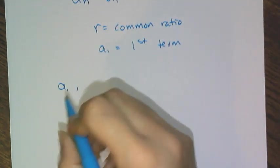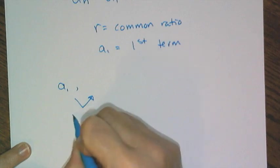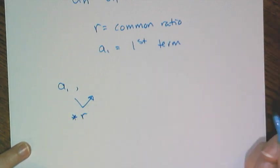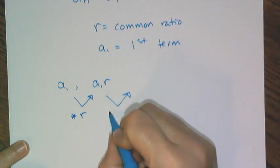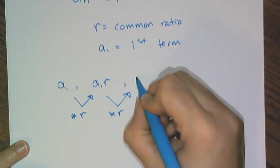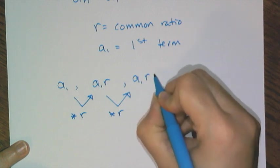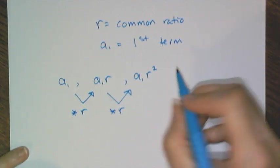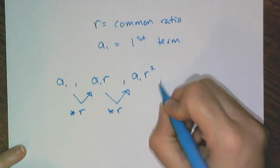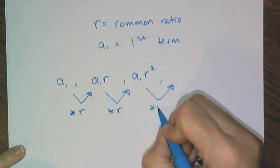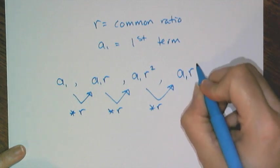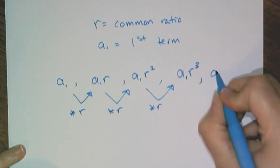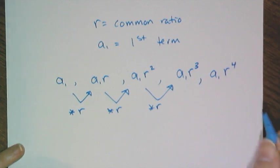If I think about a geometric sequence, of course, it starts with its first term. Now, to find the next term, remember, you have to multiply it by the common ratio or r. So you get a sub 1 r. And to find the next term, you have to multiply it by r again, so you get a sub 1 r squared, or r times r, which is r squared. And then to find the next term, I multiply it by r again, and I get a sub 1 times r to the 3rd power, and then I get a sub 1 r to the 4th power for the next one.